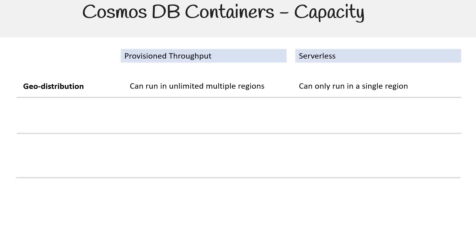When it comes to geo-distribution, the provisioned throughput option in Cosmos DB offers unlimited multi-region support. In contrast, the serverless option is restricted to a single region. In terms of storage capacity, provisioned throughput allows for unlimited storage per container, while serverless is capped at 50 gigabytes.